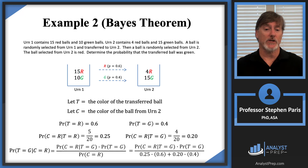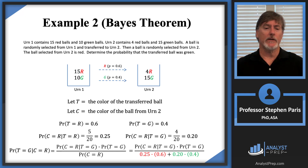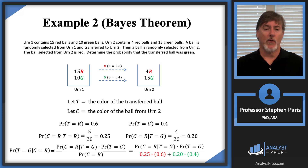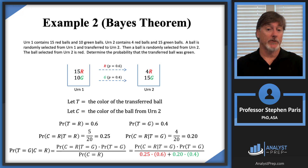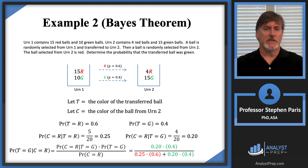I'll highlight the first term in red and the second term in green. The key point is that the numerator will always be one of those terms in the denominator. The numerator corresponds to the transferred ball being green, so I replace the numerator with the green values from the denominator. That's how Bayes' theorem always works — the denominator is a sum of terms, and the numerator is always one of those terms.